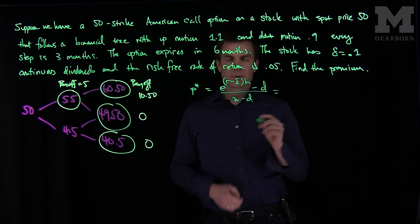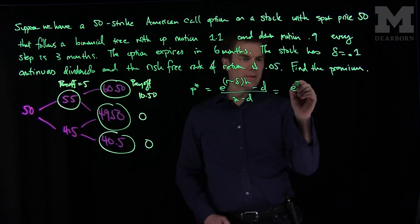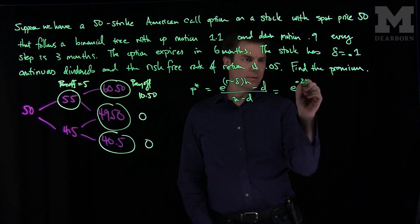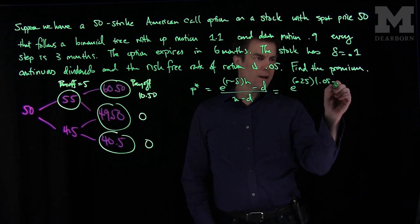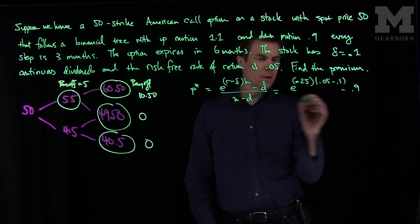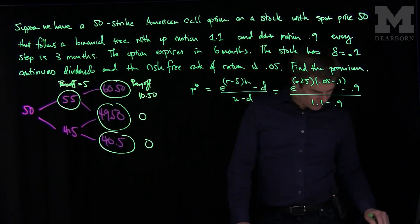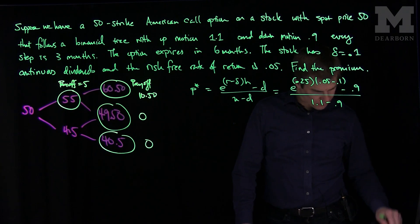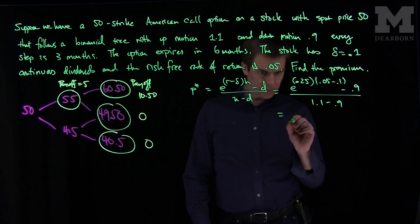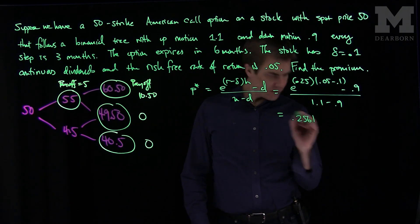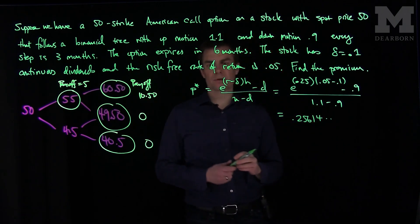When we do this problem, we see this is going to be e to negative, so the step is one half, so we're going to have 0.25 for my time step of h. Then we have r 0.05 minus 0.1 for the dividend rate, minus 0.9 over 1.1 minus 0.9. When we plug this into the calculator, we see that this probability is 0.25614.